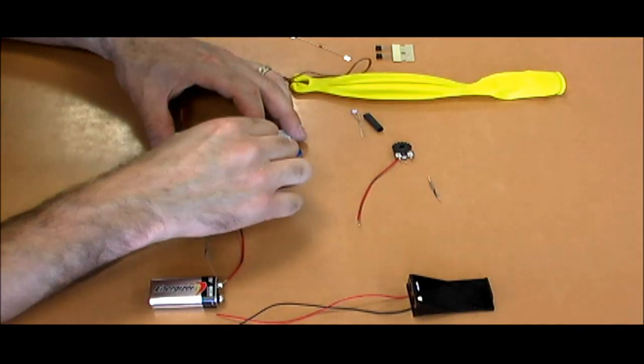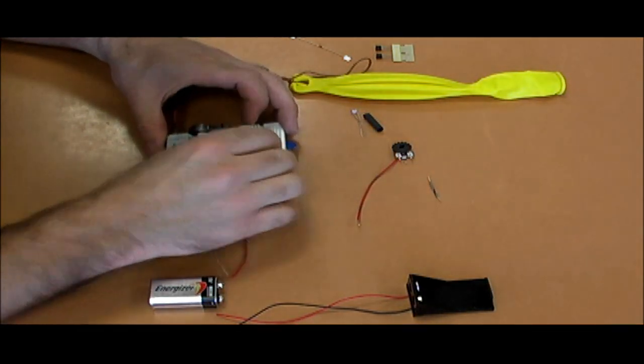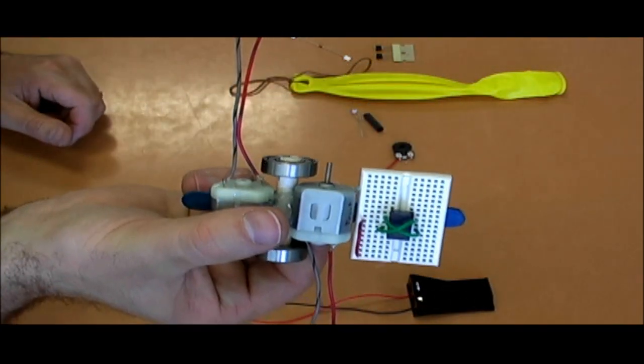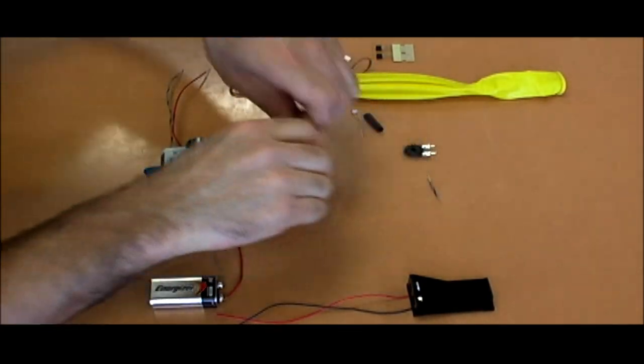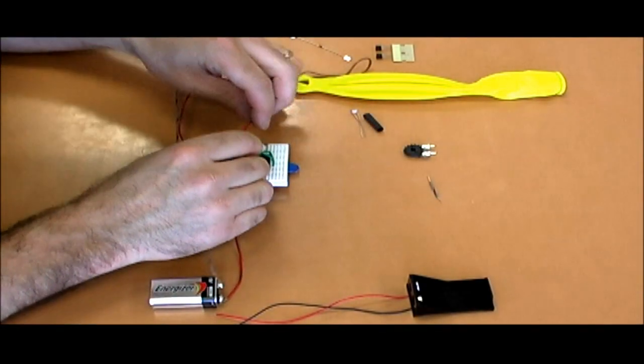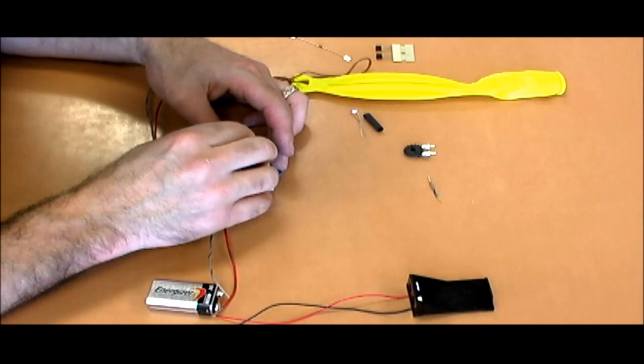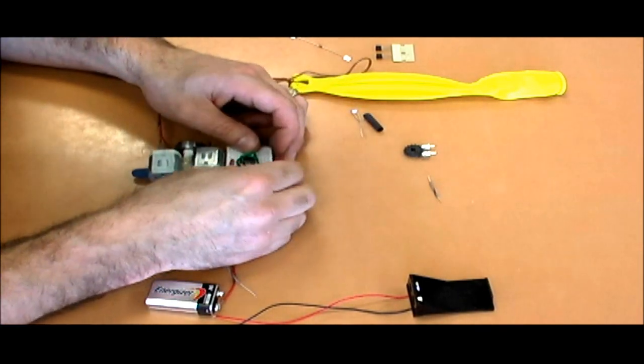Okay, next I'm putting in some jumpers. These are going to run power around the board. I need to do that in two places. And I use red wire to indicate that. There we have that.